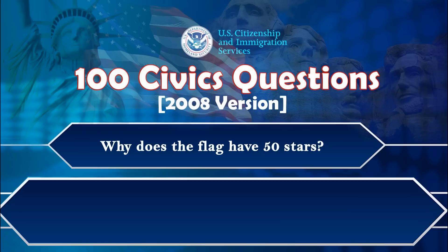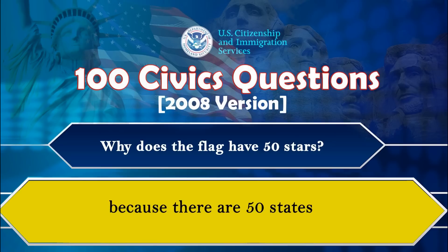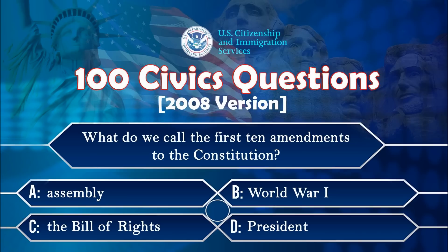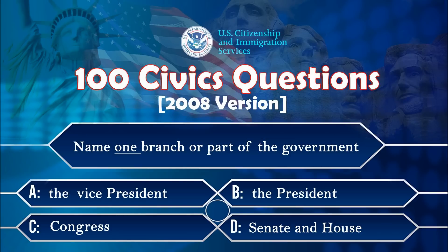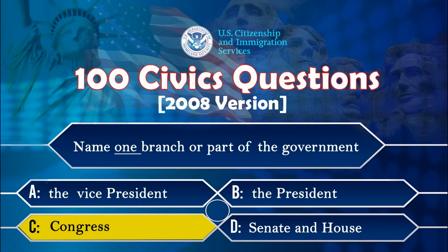Why does the flag have 50 stars? Because there are 50 states. What do we call the first 10 amendments to the Constitution? The Bill of Rights. Name one branch or part of the government. Congress.